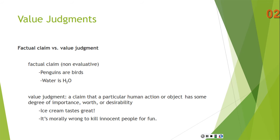Then you have value judgments. This is a claim that a particular human action or object has some degree of importance, worth, or desirability. It could be something as simple as ice cream tastes great, or something as serious as it's morally wrong to kill innocent people for fun. The claim that ice cream tastes great is a sort of subjective claim about what value you place on ice cream — you like it — but you're not making any sort of claim about what other people might value.